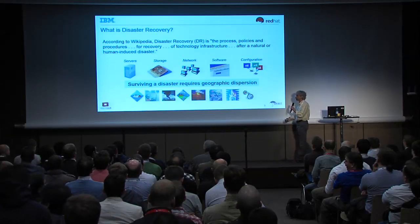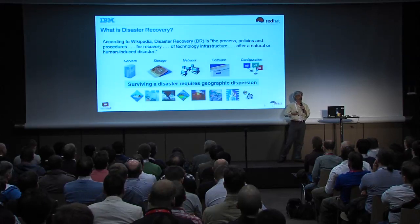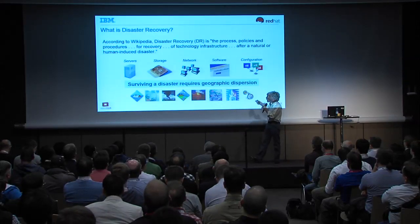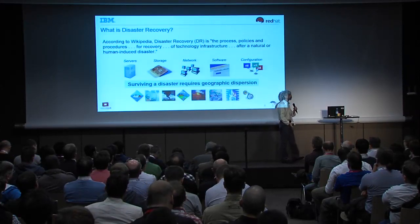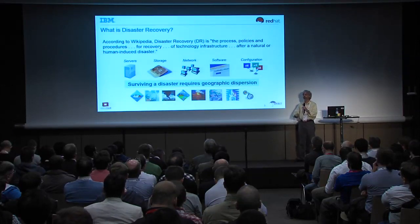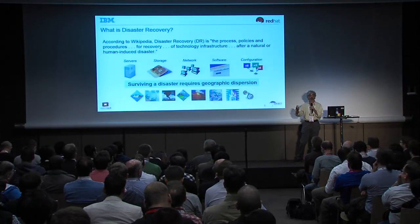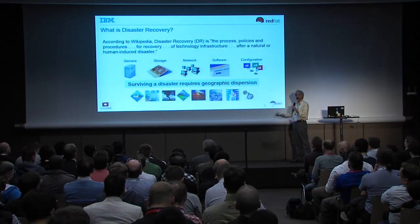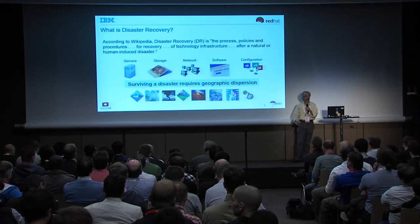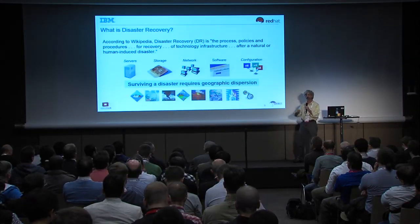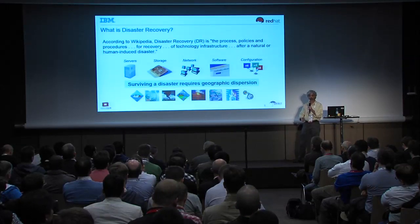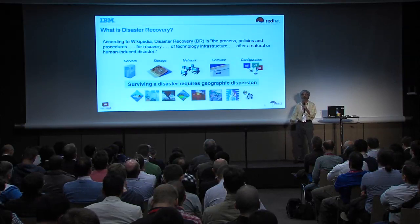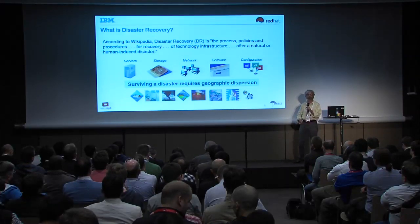What kinds of disasters are we interested in? When we say disaster, we don't mean a disk crashed or a server failed. We're looking at disasters which take out a data center — things like floods, fires, terrorism, maybe even volcanoes. When you have a disaster that takes out a data center, you need geographic dispersion to survive it. We talk about a primary — the data center where your application and workload is running — and a secondary, which is where you recover after the disaster. Your data and metadata need to be available at the secondary or some third location, because after a disaster the primary data center is gone.